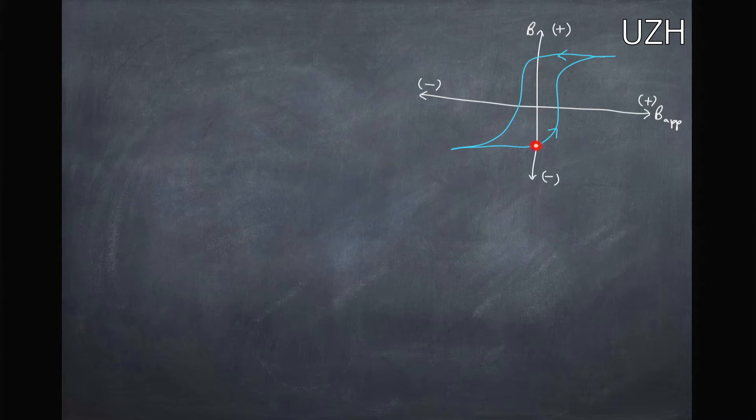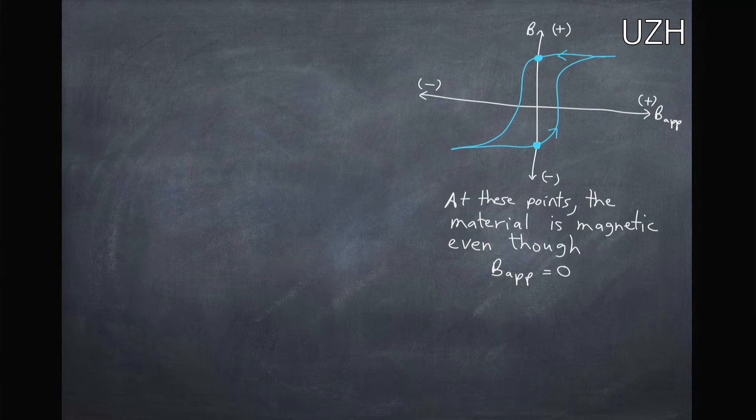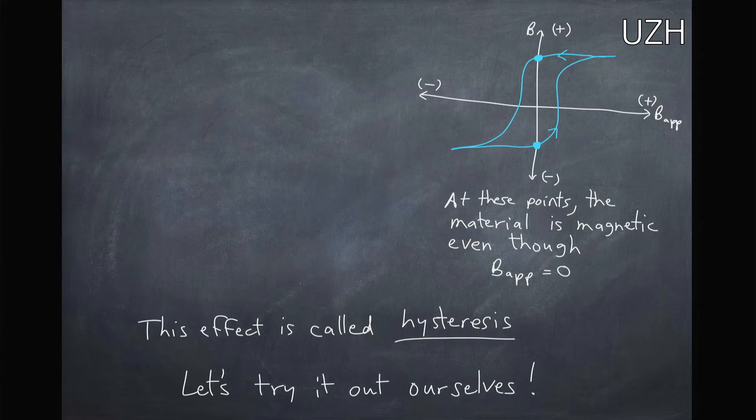This difference here, the size of this area, this space in the middle, is what we refer to as this hysteresis, where we have the material as being magnetic even though there's no applied magnetic field. The applied magnetic field is zero here, but we see that there's leftover remnant field. This effect is called hysteresis, and let's see if we can test it out ourselves with our experimental setup.